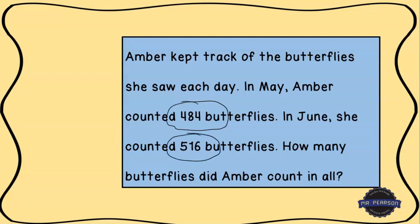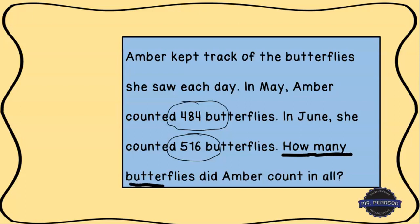We're going to circle both of those. Then we want to underline our question. The question we're trying to solve is: How many butterflies did Amber count in all? Let's underline that right there. So, how many butterflies did Amber count in all is our question.